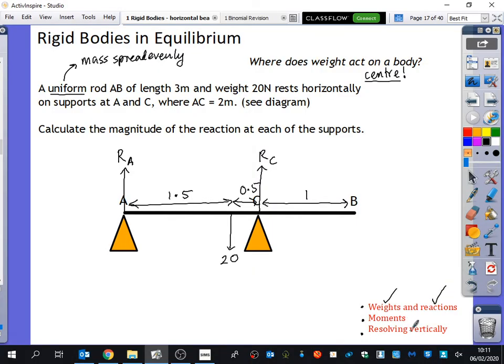So we've done the weights and reactions. We're now going to do moments and resolving vertically. Now if I resolved the forces up and downwards, what would my equation say if I said that up equals down? RA plus RC equals 20. RA plus RC equals 20. But I can't find out what RA is because I don't know what RC is. And I can't find out what RC is because I don't know what RA is. So maybe resolving wasn't the best thing to do first here. But it's good to know that we could do that.